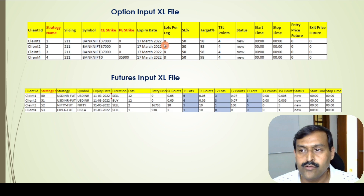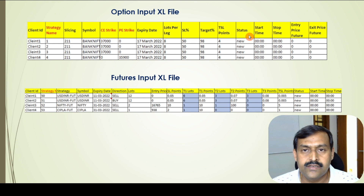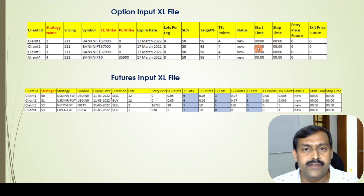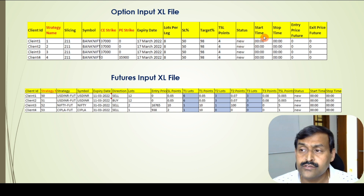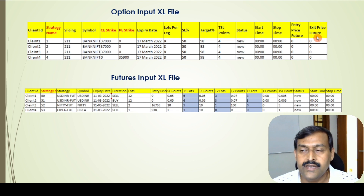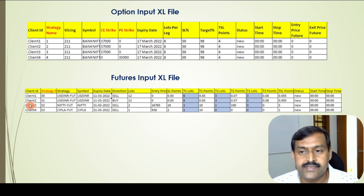The expiry date, lots per leg, and quantity can be mentioned here along with percentage of stop loss, percentage of target, and trailing stop loss points. Status has three values: new, run, and exit. When set to 'new' it is just a new strategy created; when set to 'run' the strategy gets triggered; and when set to 'exit' the strategy is exited. We can also mention the start time of the strategy and the future price at which the strategy needs to be triggered or exited. Similarly, the futures-based strategy sheet has its own set of inputs.